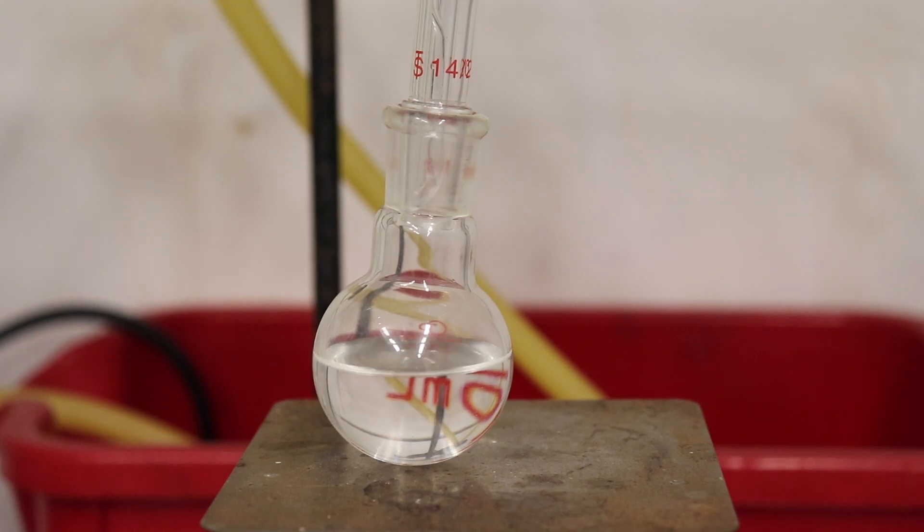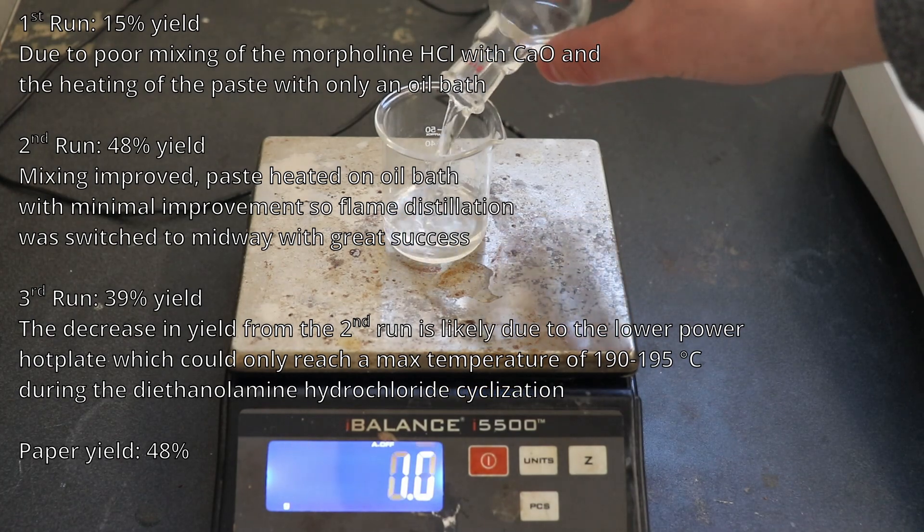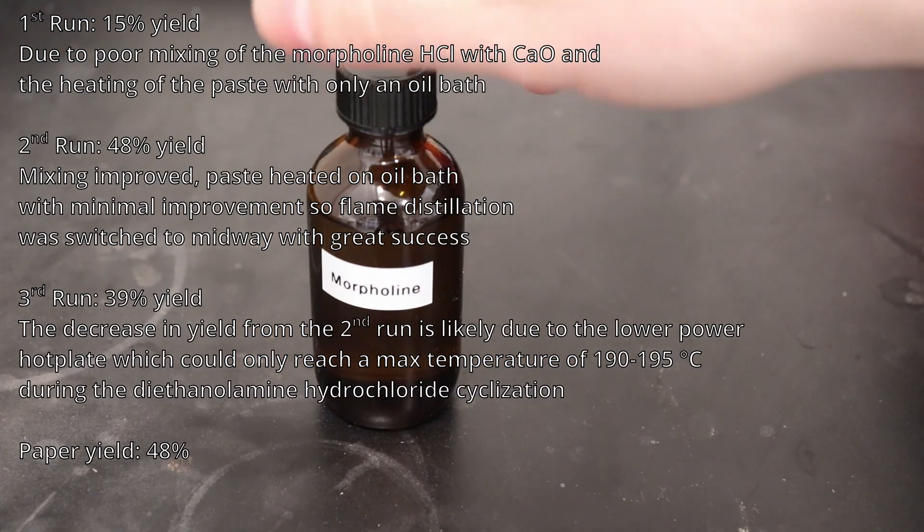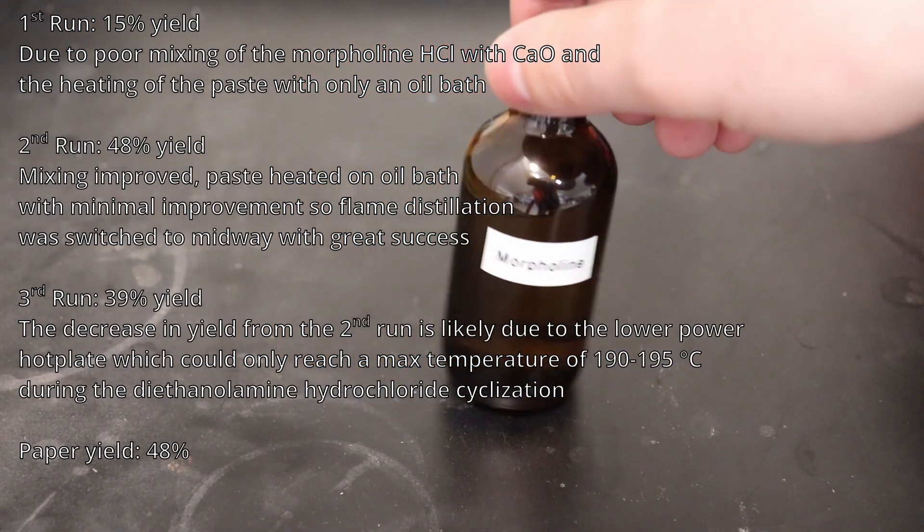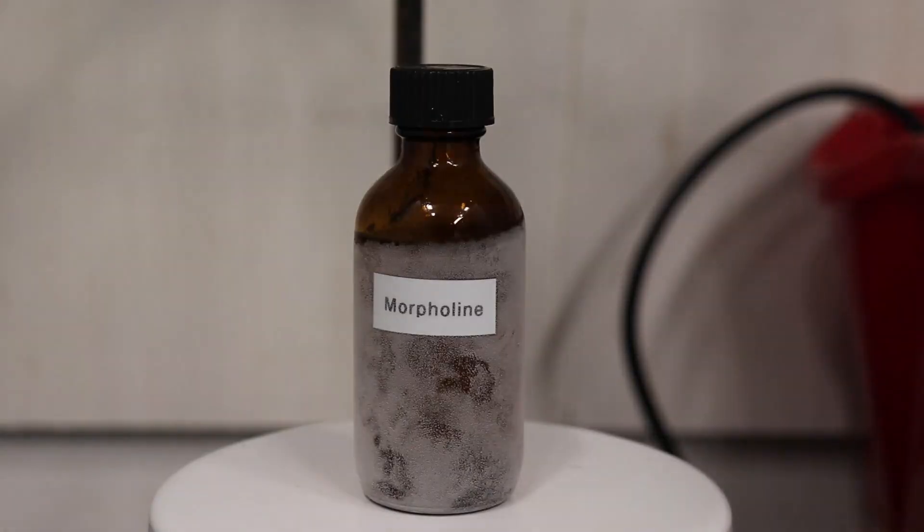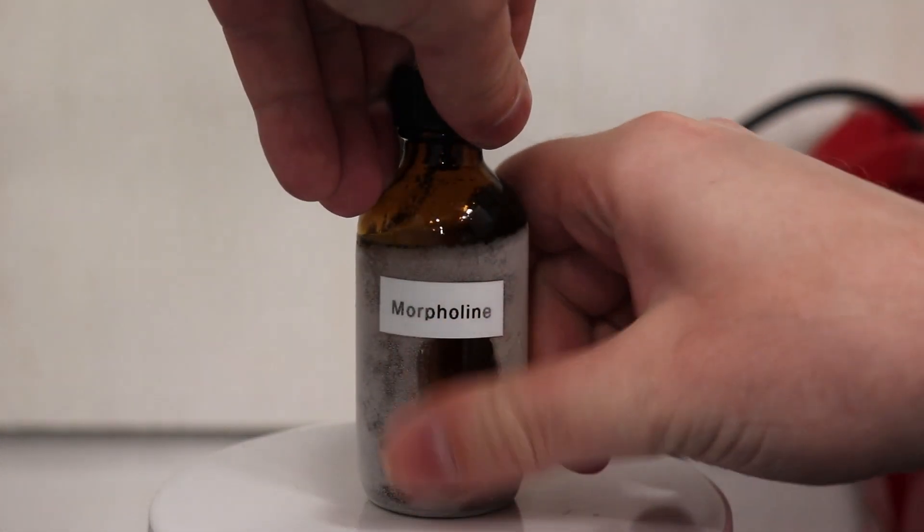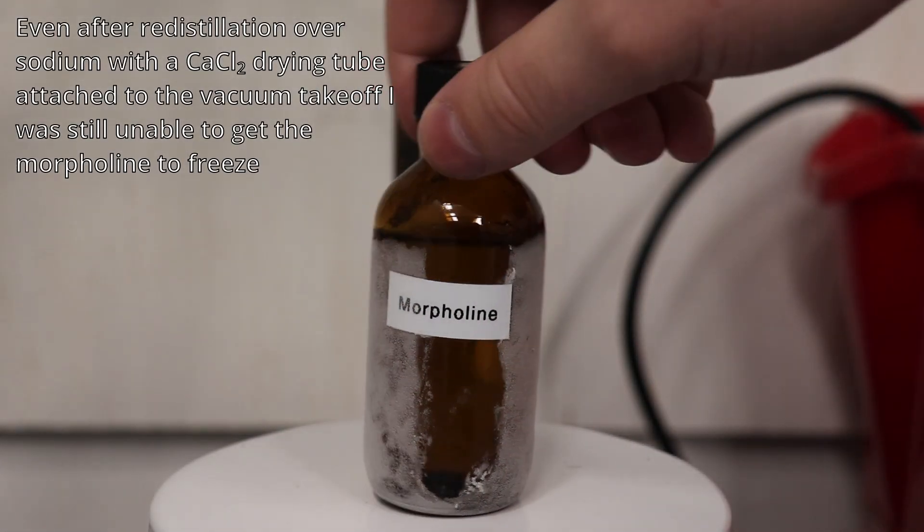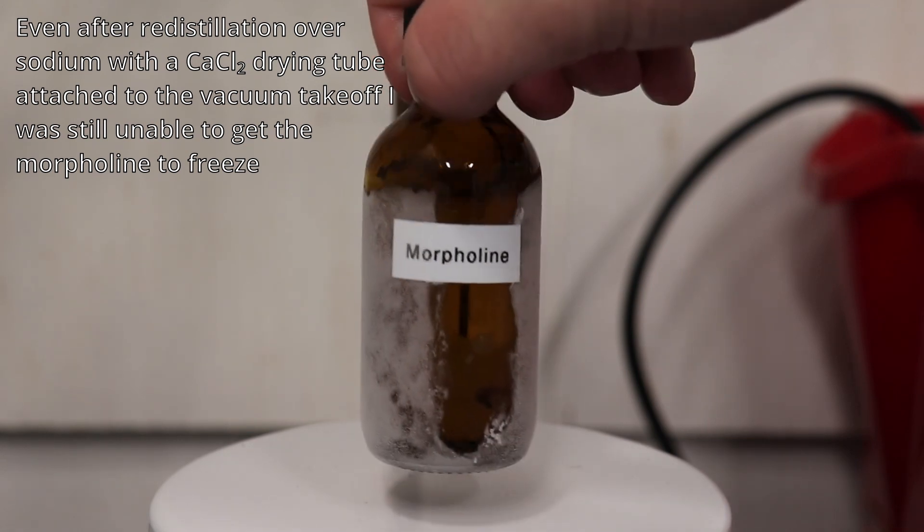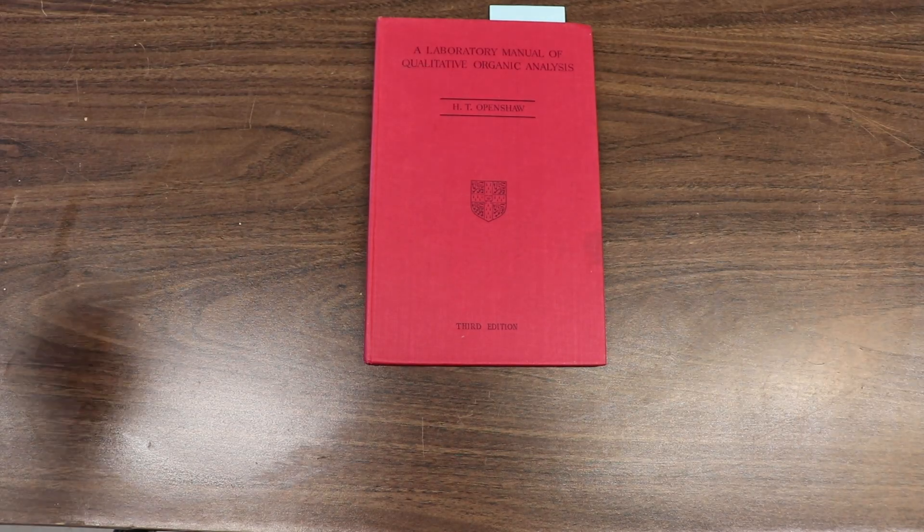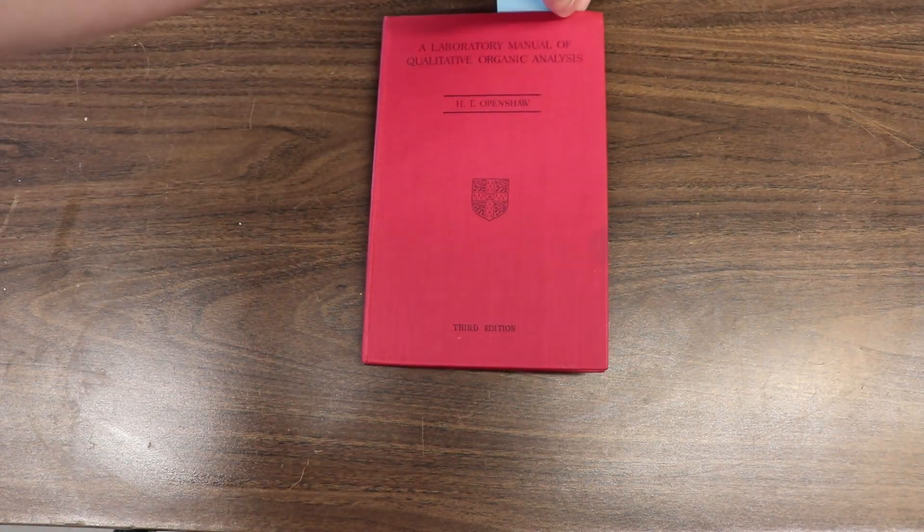The boiling point was already fairly good evidence of the successful preparation of morpholine. However, I wanted to gather some more evidence to further corroborate this result. The first test I did was the freezing point of morpholine. The theoretical freezing point of morpholine is negative 5 degrees Celsius. However, even at negative 15, it was still not frozen. This result is not super surprising as morpholine is extremely hygroscopic, and it's quite possible that even a tiny amount of water will greatly depress the freezing point of morpholine.